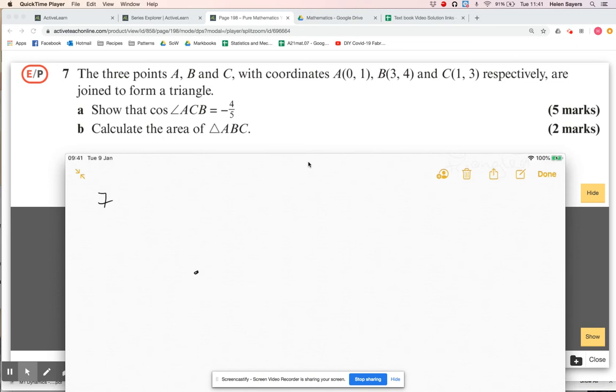So let's say zero one is there, so three four can be about there, and one three can be about there.